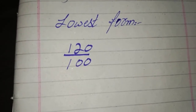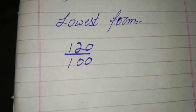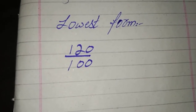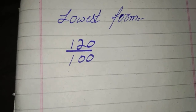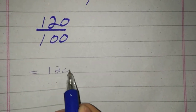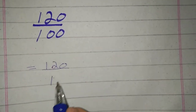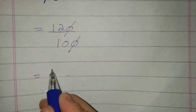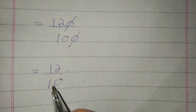Assalamu alaikum to all, hope you are all fine. Today our topic is lowest form. The question is 120 divided by 100. We cut the zeros: 0 with 0, giving us 12 divided by 10. Now we check which times table it came from.